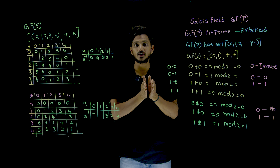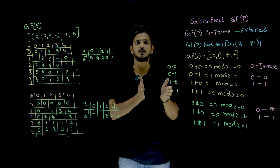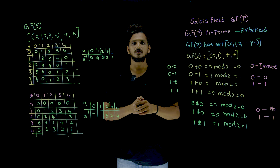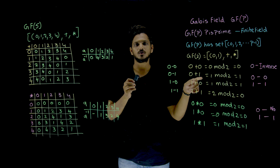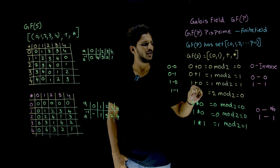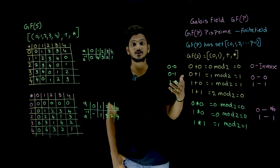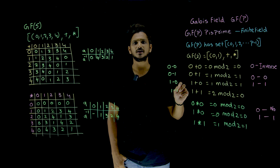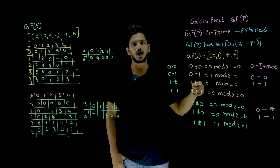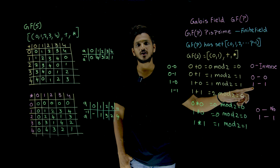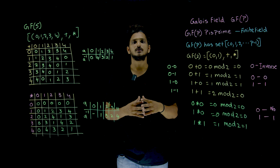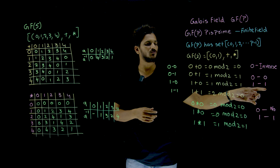Addition is going to satisfy associative and commutative property. The identity element for addition is 0 — any number plus 0 gives you that number. Now, the inverse element exists for all elements. For 0, the inverse is 0: 0 plus 0 is 0, 0 modulus 2 is 0 — you get the identity element. For 1, the inverse is 1: 1 plus 1 is 2, 2 modulus 2 is 0 — you got the identity element. So inverse of 1 is 1, inverse of 0 is 0.